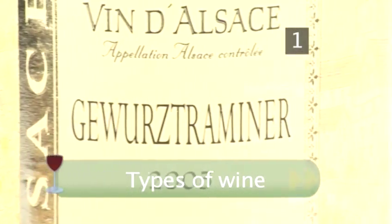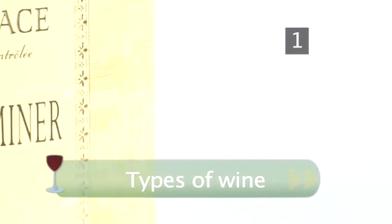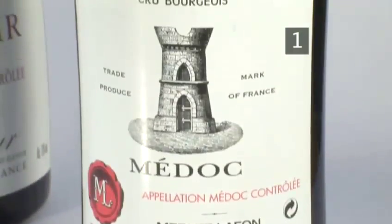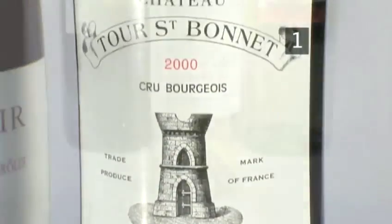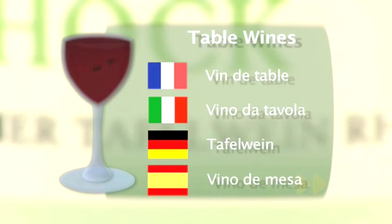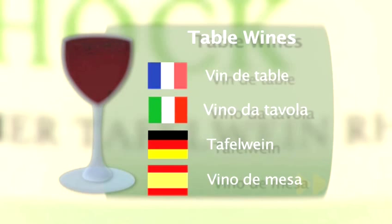Step 1. Types of wine. There are several different categories for Old World wines. There is table wine, country wine, and wine with controlled appellation. The wines are categorized by how closely they stick to local wine laws, and so are not always an indicator of quality. Table wine is the most basic of these. In France it's called vin de table, in Italy vino de tavola, in Germany Tafelwein, and in Spain vino de mesa.